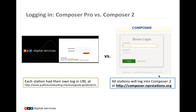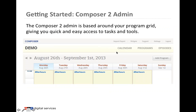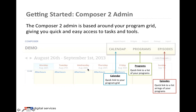In Composer 2, all stations log in at the same place. The URL to bookmark is composer.nprstations.org. When you log in, you'll see the entire Composer 2 admin is based around the program grid — that is where all the action happens, and all other tools are built around it.